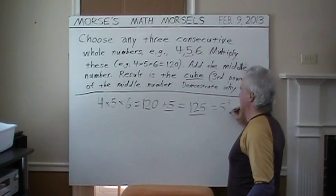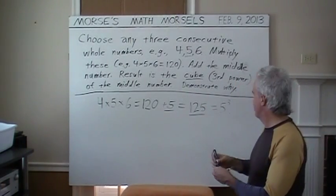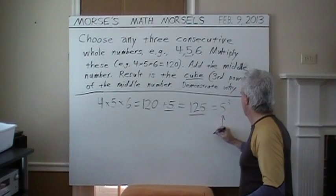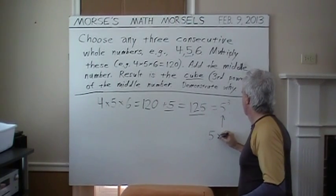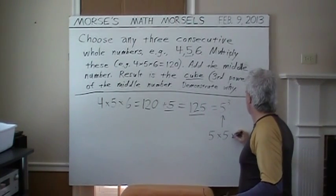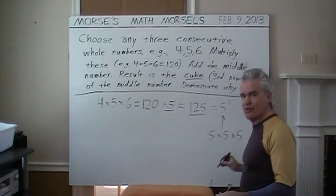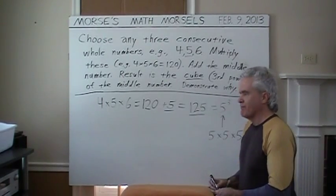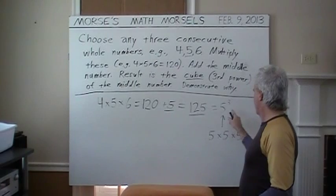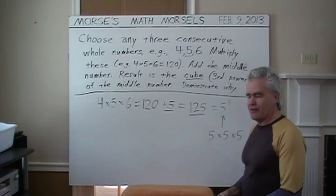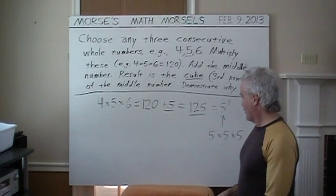Well, I'm claiming 125 equals 5 cubed, or 5 to the third power, which is all the cube means. The number just appears in the multiplication three times.